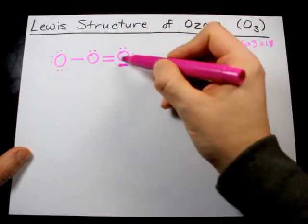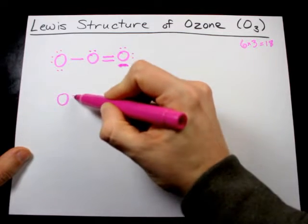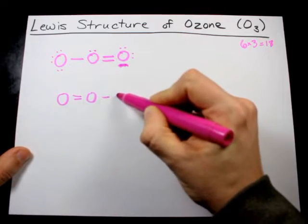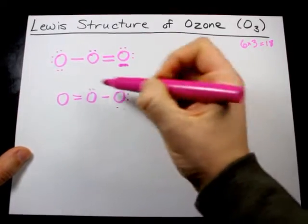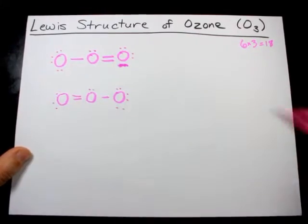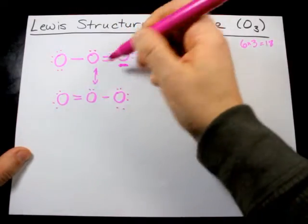Now, why couldn't I have made the double bond on the other side? Well, I absolutely could have. That would be a double bond on the left side, single bond on the right. Six electrons here, two electrons there, and four electrons there. And these happen to be what's called resonance structures.